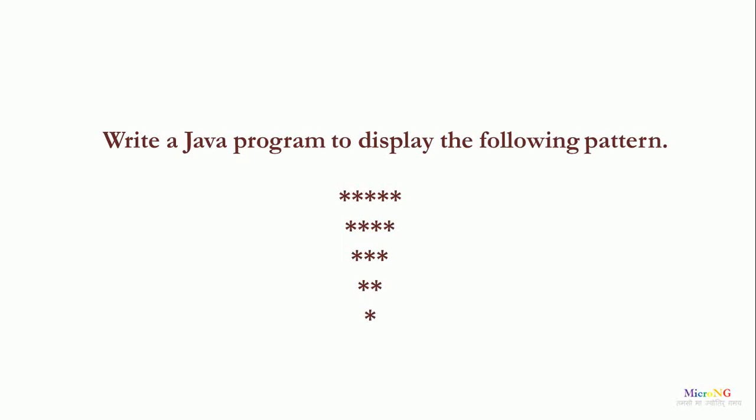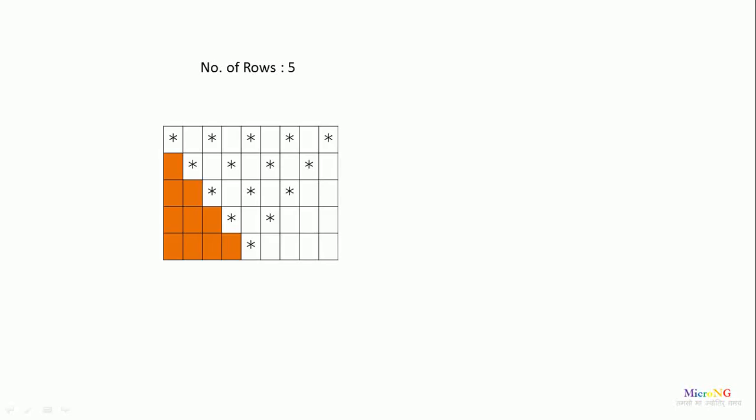Hello, this tutorial is to discuss about a Java program that displays a pattern as a number of stars. We'll display the logic behind this particular program. For example, if the number of rows to be displayed is 5, it will display the pattern like this.